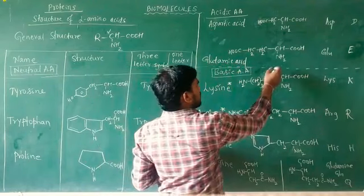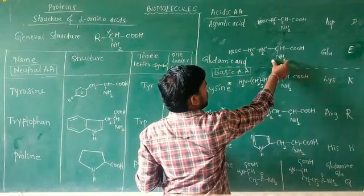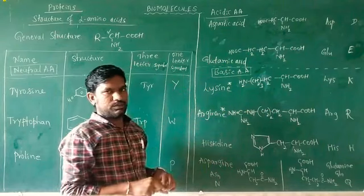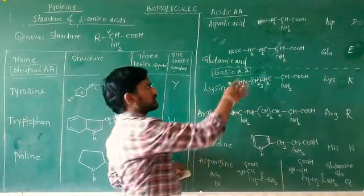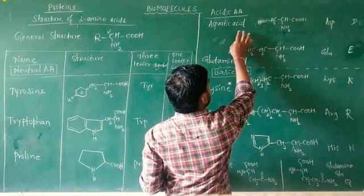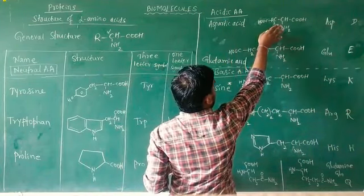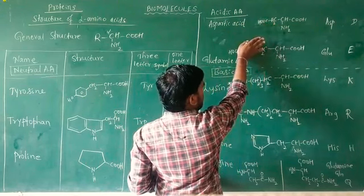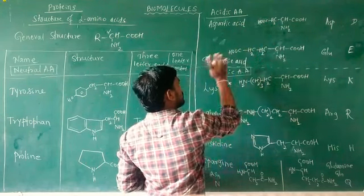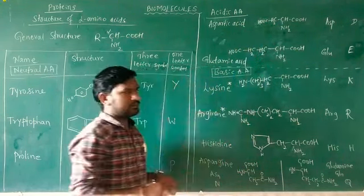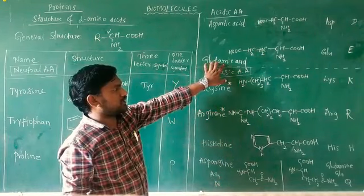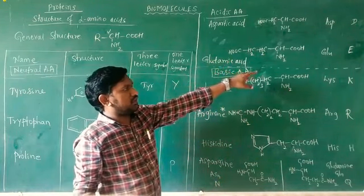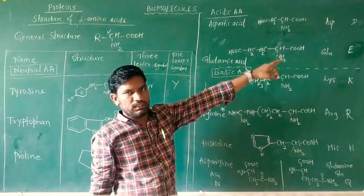More acidic groups are present compared to basic groups in acidic amino acids. For aspartic acid, R is CH2-COOH. For glutamic acid, R is CH2-CH2-COOH. Three-letter symbol for aspartic acid is ASP and one-letter symbol is D; for glutamic acid, three-letter symbol is GLU and one-letter symbol is E.